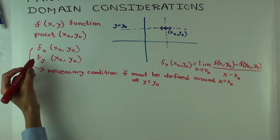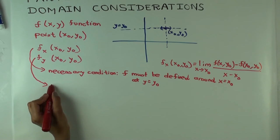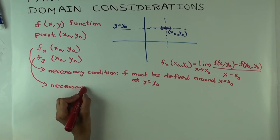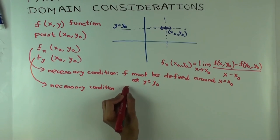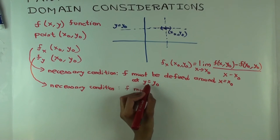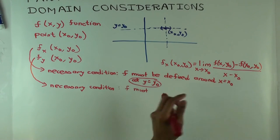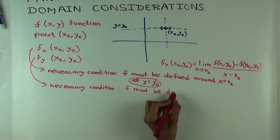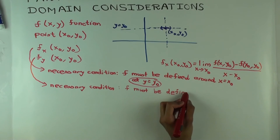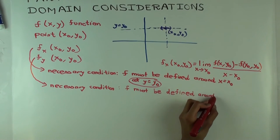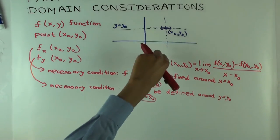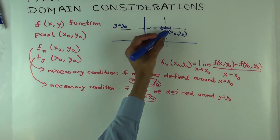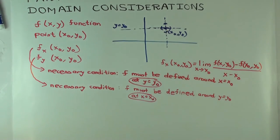What will the necessary condition be for f sub y to exist? f has to be defined on the line x equals x₀. In the picture, that's the vertical line. So whereas the previous one was on the horizontal line y equals y₀ around x₀, now it's the other way: f must be defined around y equals y₀ at x equals x₀ — fixing the x coordinate on the vertical line, with an open interval in that direction. Again, this is just a necessary condition; the limit of the difference quotient may still not exist.